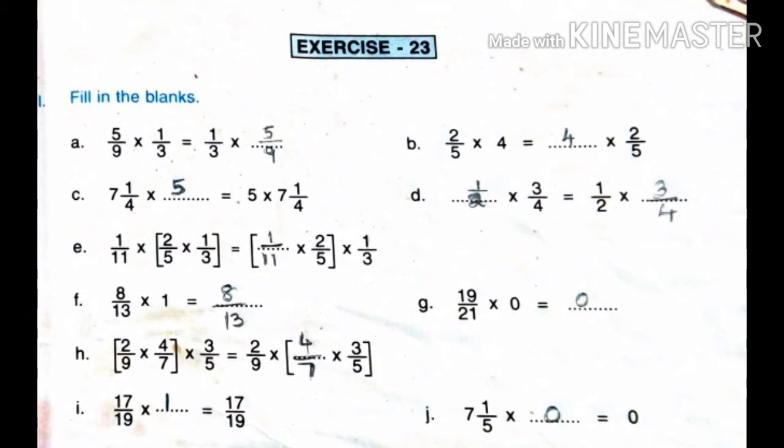Next is the multiplication property of 1. When we multiply a fraction number by 1, we get the fraction number itself. For example, 8/13 into 1 gives the answer 8/13.